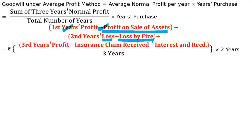In the third year, the profit is $70,000, but it includes an insurance claim received of $18,000. Since the insurance claim has been included in profit, we must deduct it (minus).